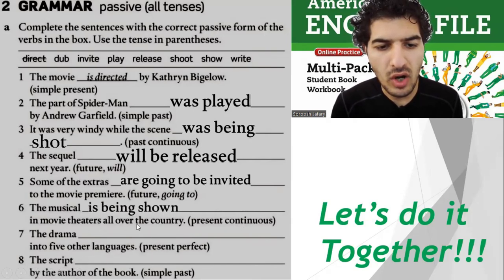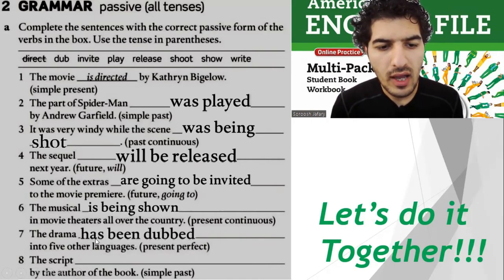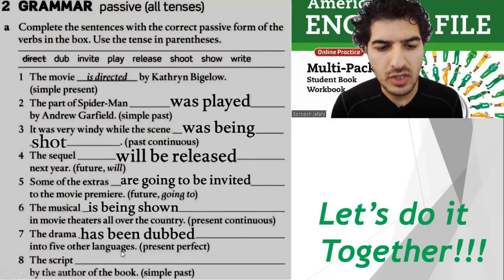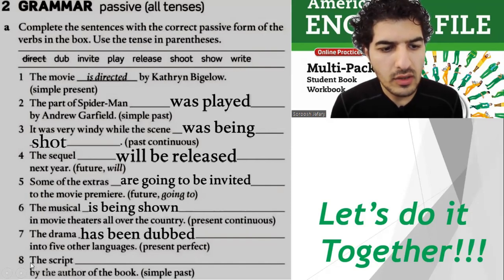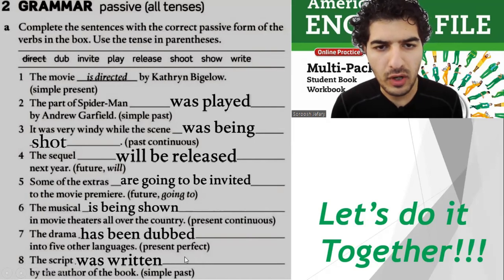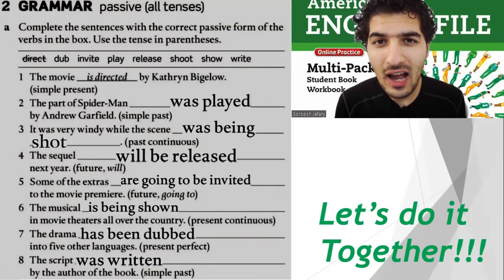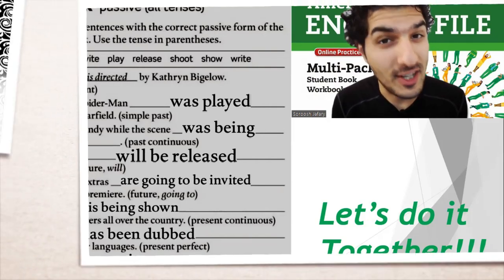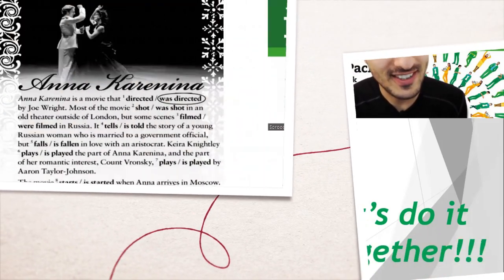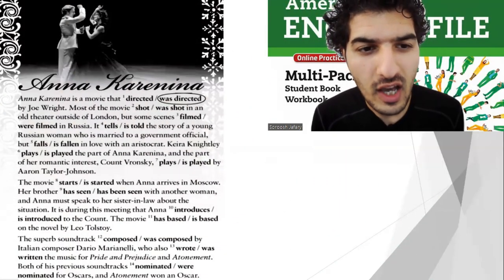Number six — present continuous: the musical is being shown in movie theaters all over the country. Number seven — present perfect: the drama has been dubbed into five other languages. Number eight — simple past: the script was written by the author of the book. Great! Now you remember the basics — time to really test you. I need you to read this and circle the correct form.